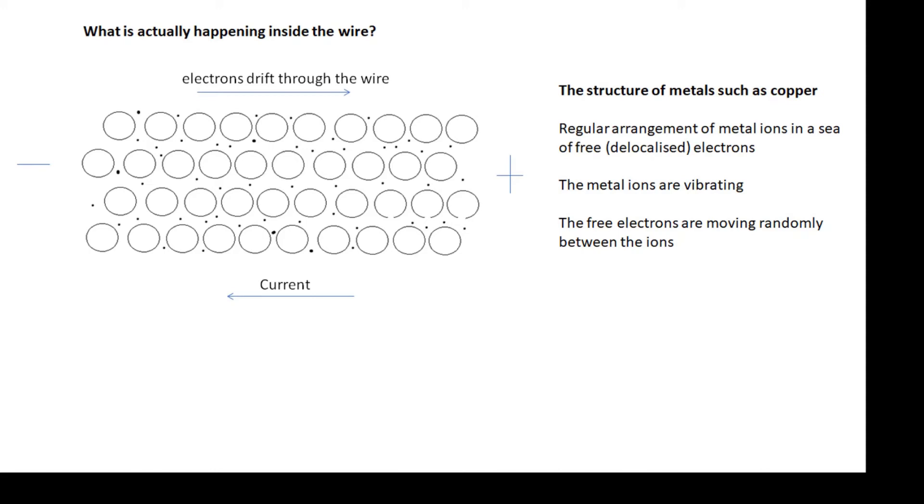So we actually have negative charge moving from negative to positive. However, current is the flow of positive charge, so the current is actually opposite to the direction that the electrons flow in. Don't worry too much about it. People get very flustered about this. As far as you're concerned, just remember current flows from positive to negative.